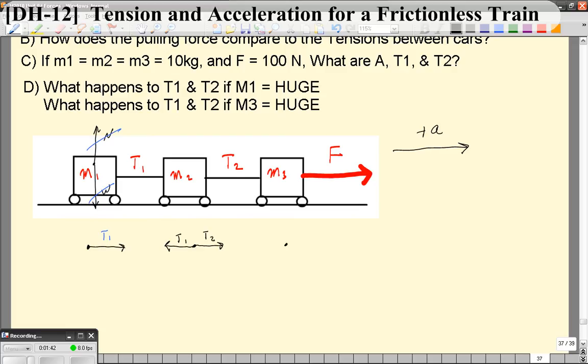And the third block also has two forces. It has the F pointing to the right, so the force that's on the front car minus tension two. So this is M1, M2, M3.